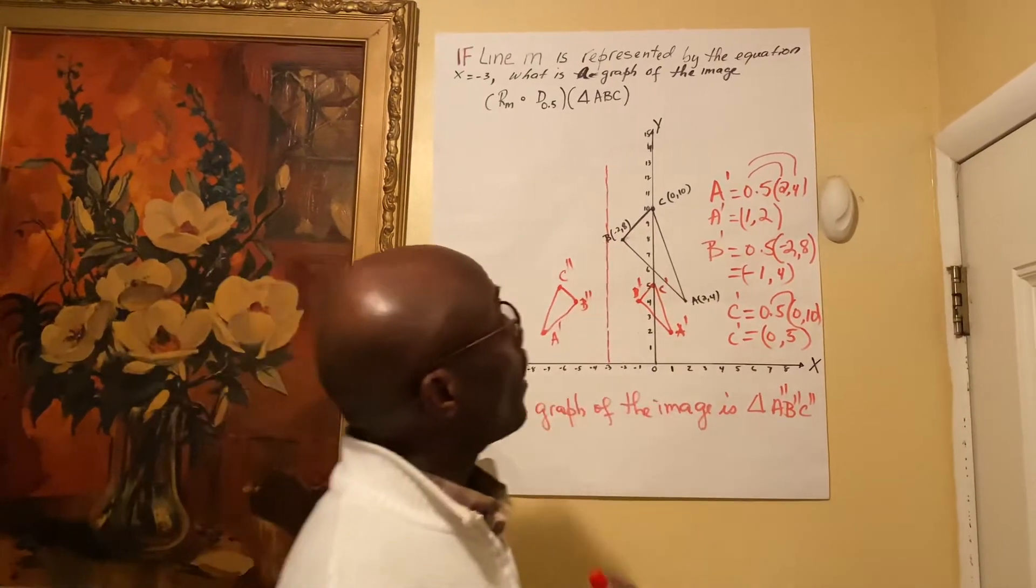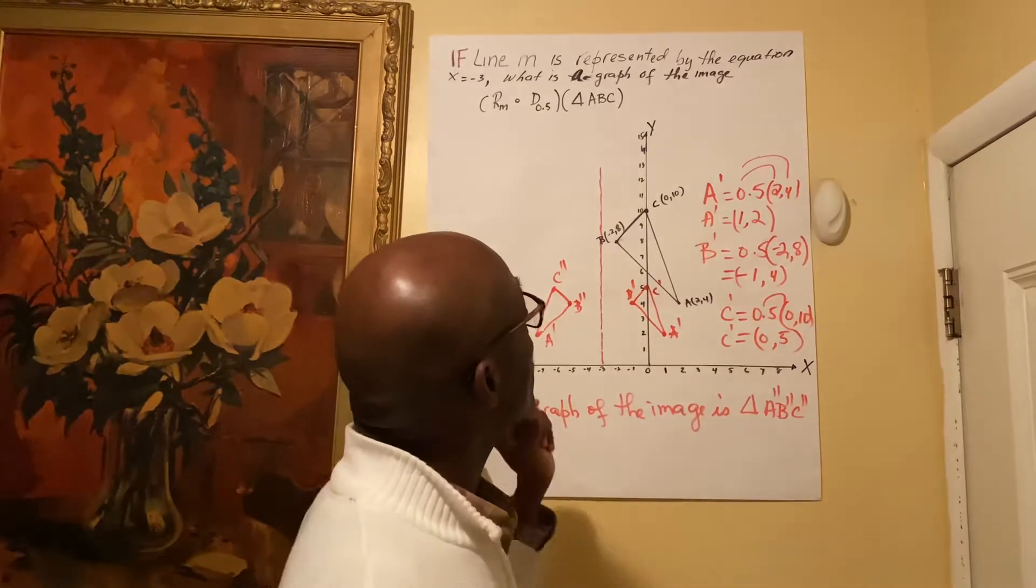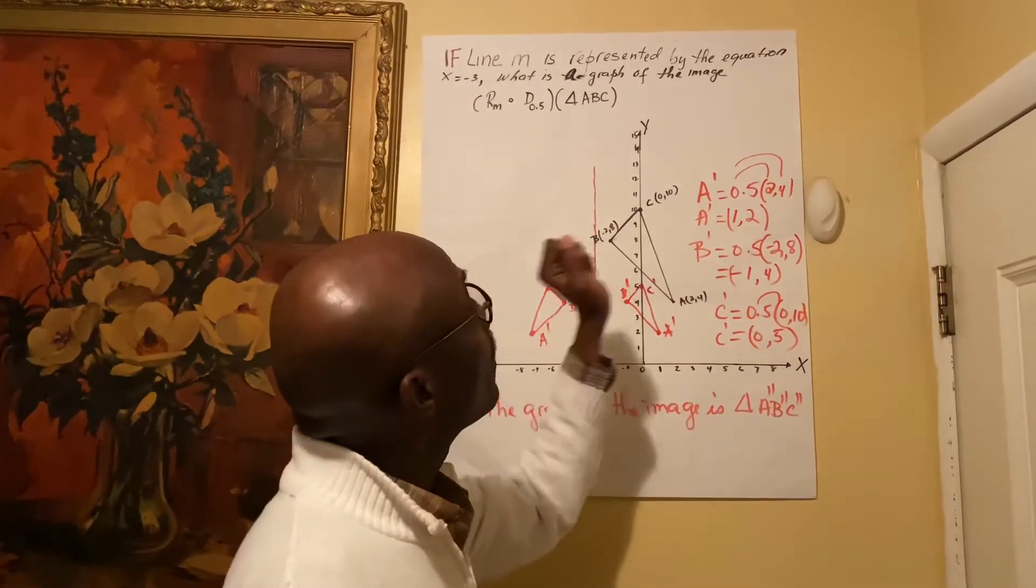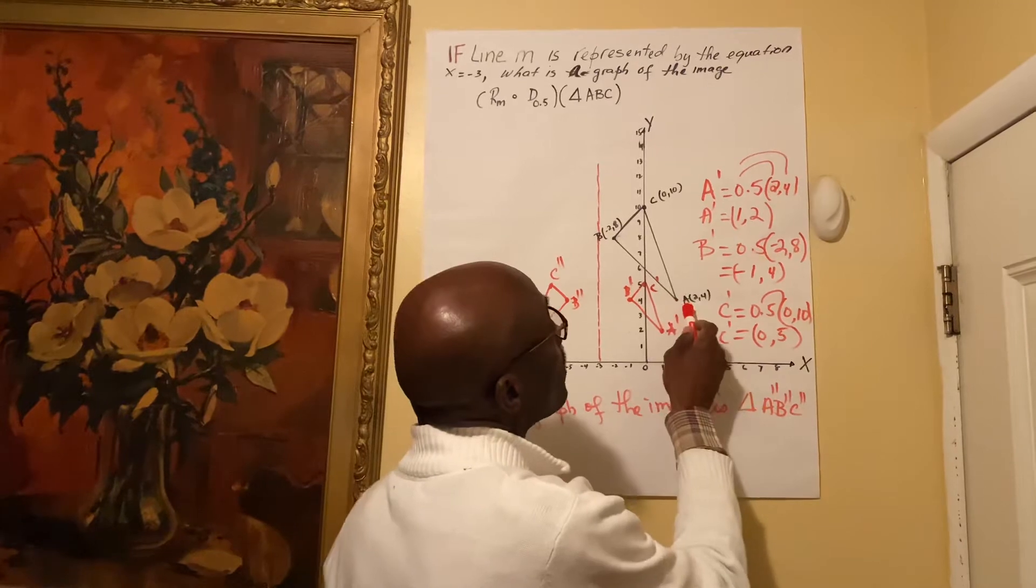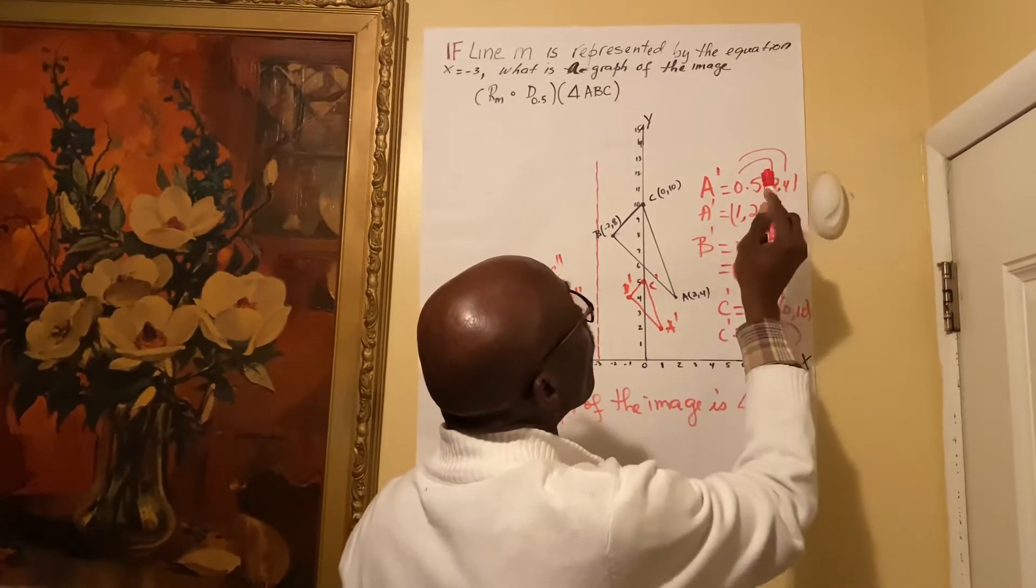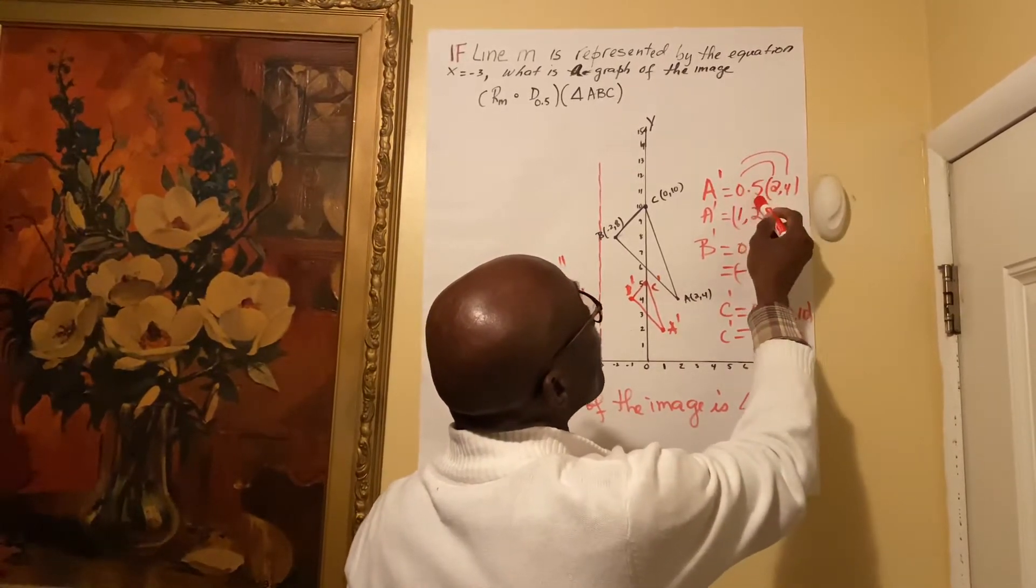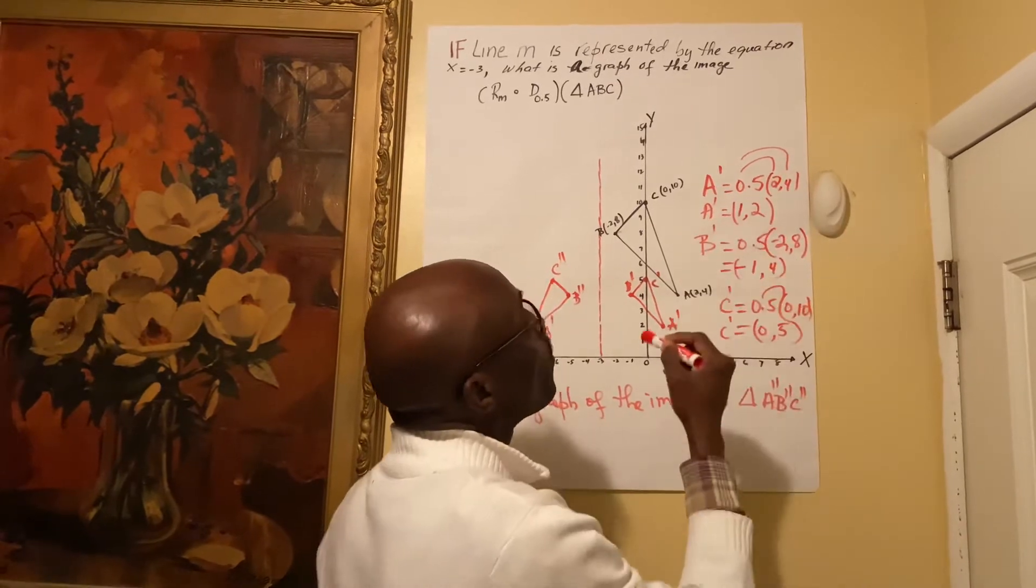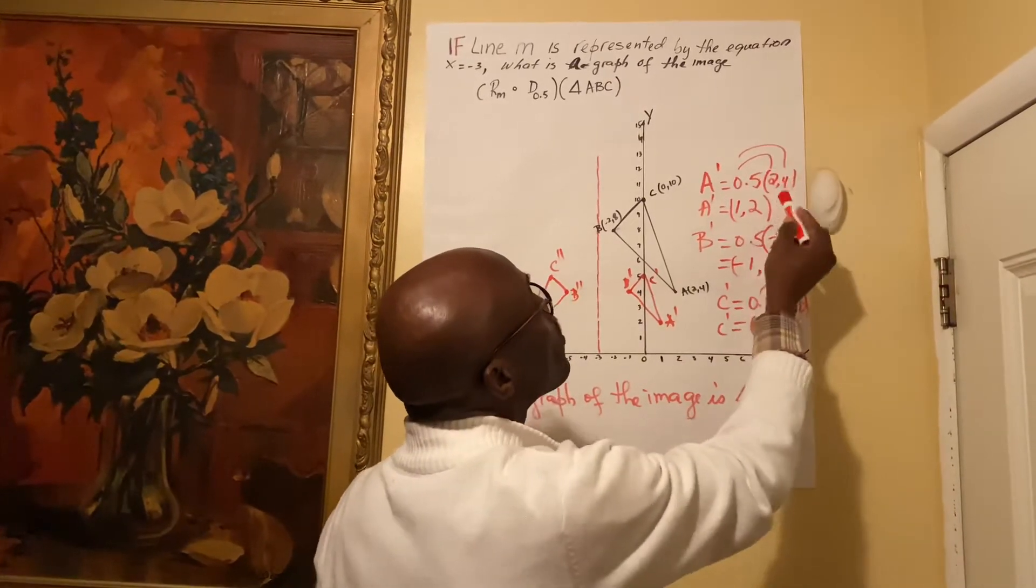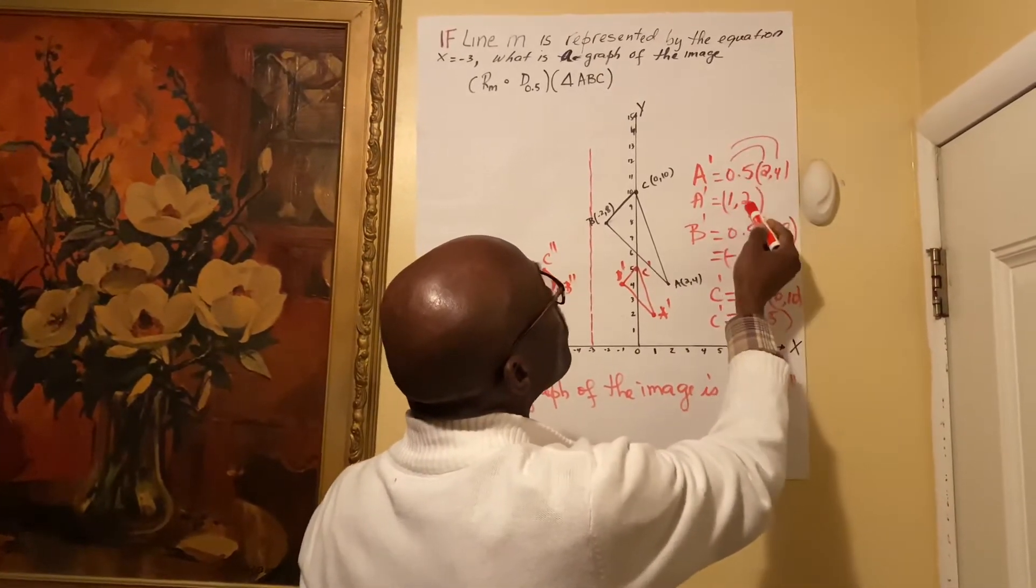A' equals 0.5 multiplied by the coordinate of A, which is (2, 4). 0.5 multiplied by 2 equals 1. 0.5 multiplied by 4 equals 2.